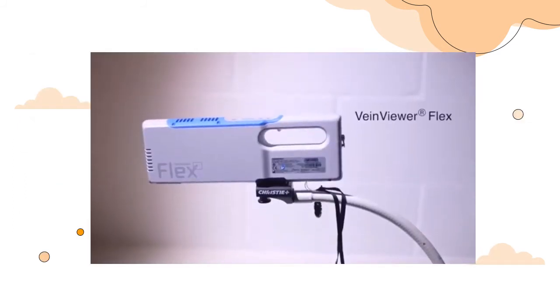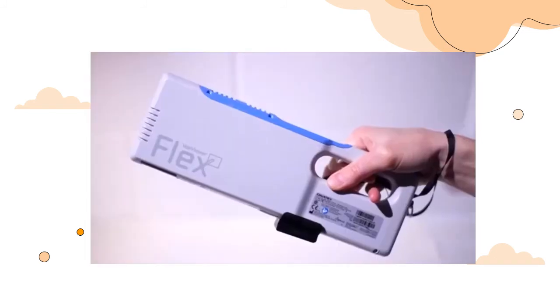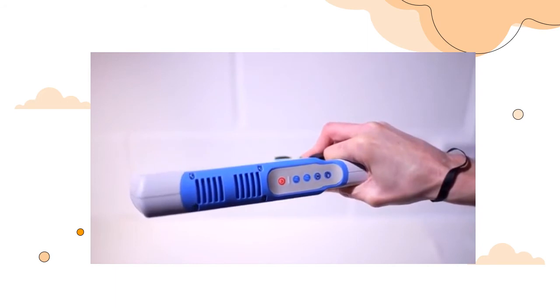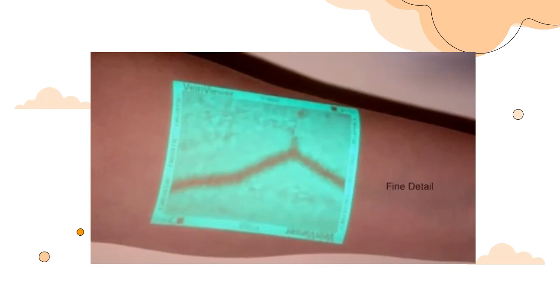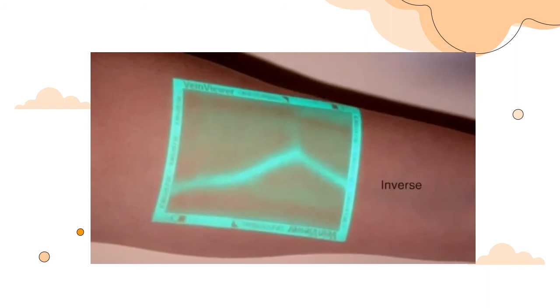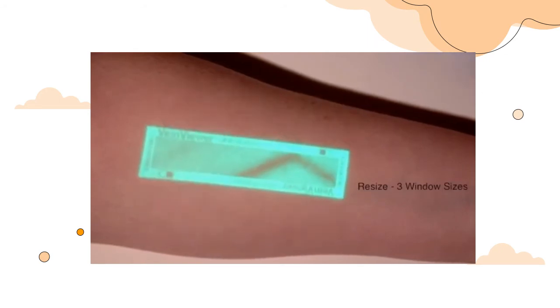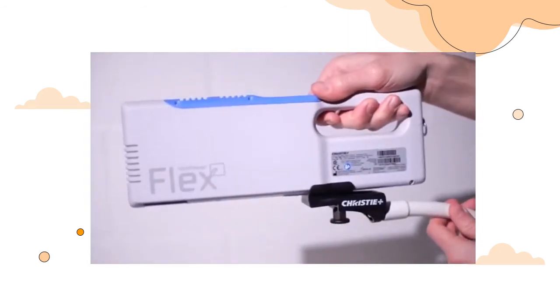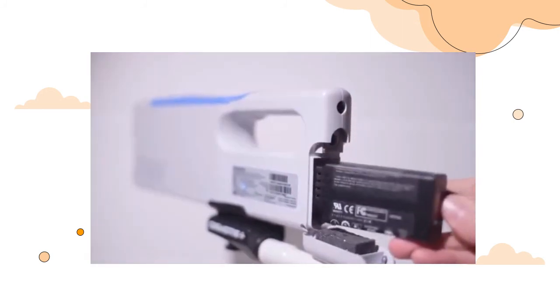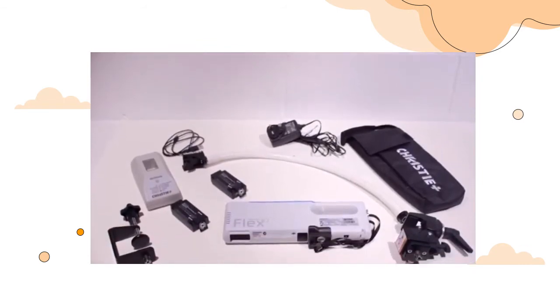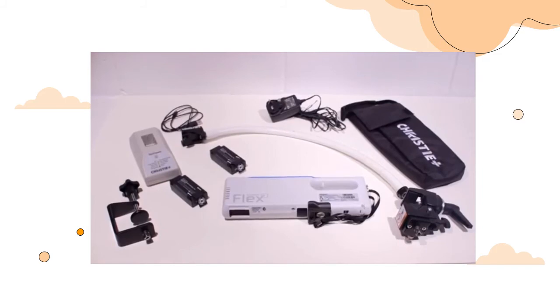VeinViewerFlex is a solution to the challenge of patients with difficult venous access. With easy-to-use controls, the device features multiple modes ideal for a range of patients, from the very young to those with conditions which make venous access especially difficult. Through the use of near-infrared technology, VeinViewerFlex can project a real-time image of the venous pathway directly onto the surface of the skin. The available modes are suitable for a range of skin tones and applications. VeinViewerFlex can be mounted for hands-free, eyes-on patient use using clamps and arm provisions, and fast-swap batteries allow continuous use.